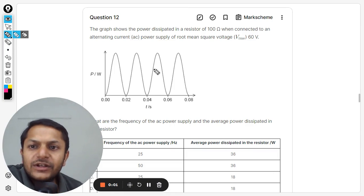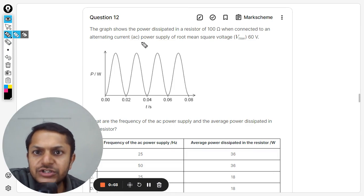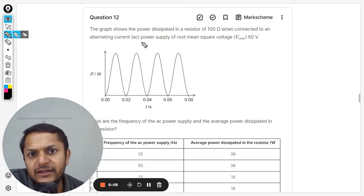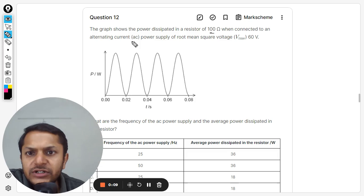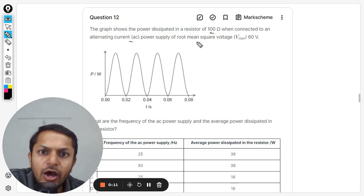Our curious students, let us see what is there in this question. The graph shows the power dissipated in a resistor of 100 ohm when connected to an alternating current power supply of root mean square voltage V_RMS that is 60 volt.